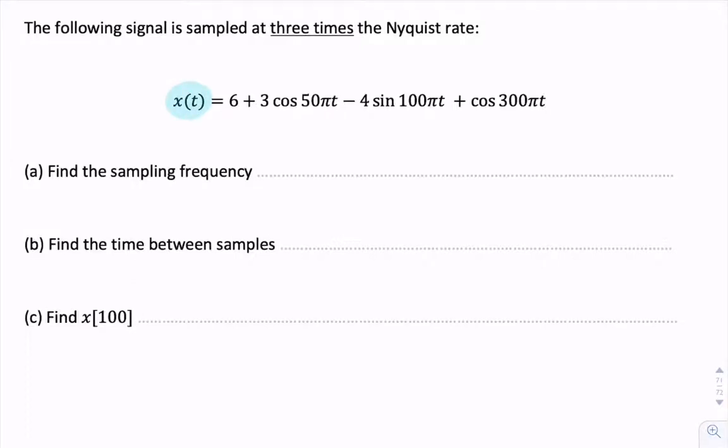Here, we're given a signal in a time domain, and we're asked for the sampling frequency. We're told that this is three times the Nyquist rate.